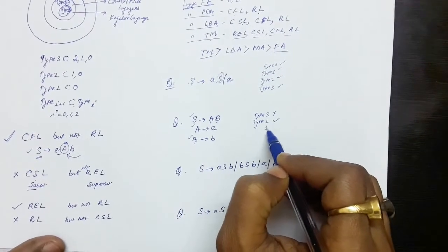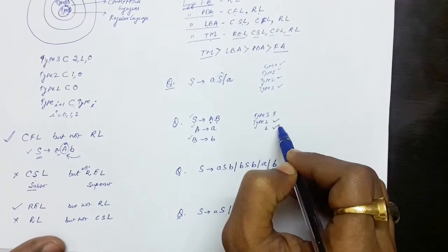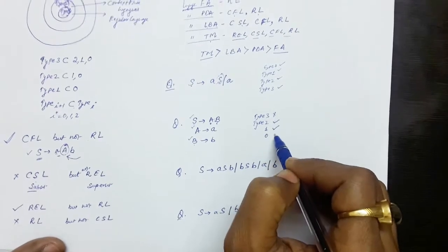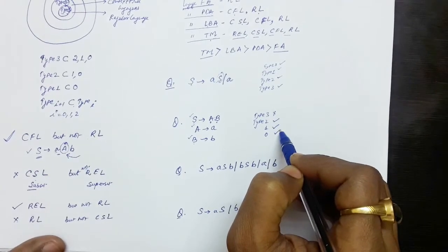If it is Type 2, obviously it is Type 1. And if it is Type 1, obviously it is Type 0.